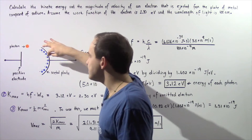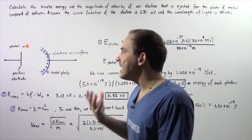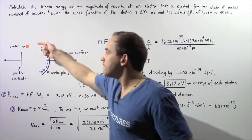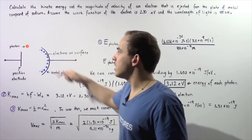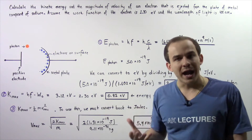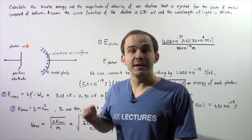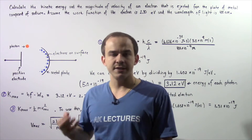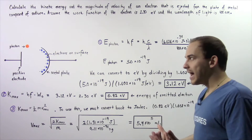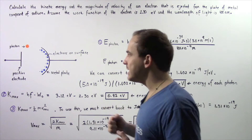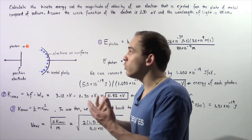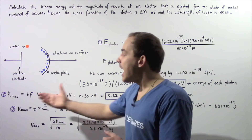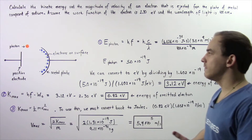If the photon hits the electron and carries an energy less than the work function, the electron will not eject. However, if the photon collides with the electron and carries an energy greater than the work function, the electron will eject and travel to the positive electrode with a certain velocity v. In part 1, we calculate the energy of the photon. In part 2, the energy of the electron. In part 3, the velocity of the electron.